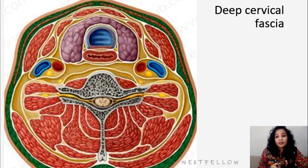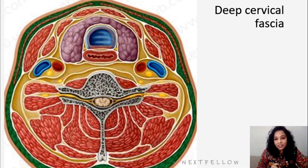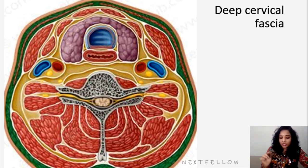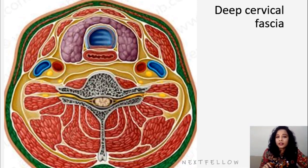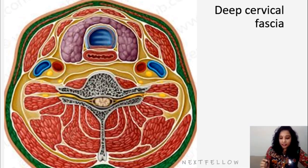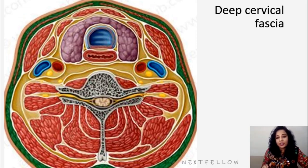There are three parts of deep cervical fascia in the neck. One is the investing layer, then the pre-tracheal layer, and the pre-vertebral layer. The peripheral layer is the investing layer.